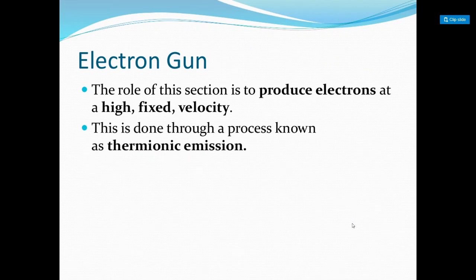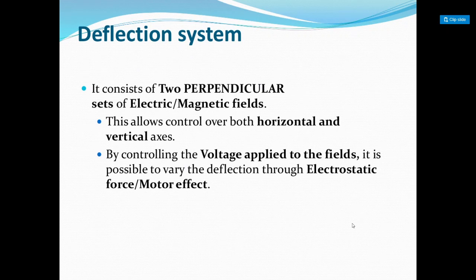The role of the electron gun is to produce electrons at a high fixed velocity, and this is done through a process called thermionic emission. Next is the deflection system, which has two perpendicular sets of electric or magnetic fields. This allows control over both horizontal and vertical axes. By controlling the voltage applied to the fields, it is possible to vary the deflection through electrostatic force or motor effect.